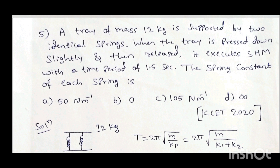Fifth question: a tray of mass 12 kg is supported by two identical springs. When the tray is pressed down slightly and released, it executes SHM with a time period of 1.5 seconds. The spring constant of each spring is: option A 50 N/m, option C 105 N/m. This question appeared in KCET 2020.